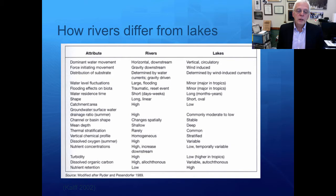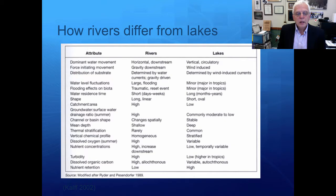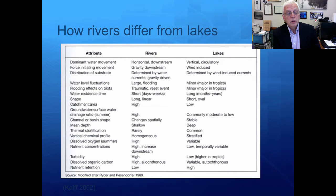The shape of rivers is very different — rivers are very long and linear, whereas lakes are quite short and oval. The ratio between the catchment area and the area of the water body is very high in rivers and relatively low in lakes. The groundwater to surface water drainage ratio in the summertime is quite high in streams and commonly low to moderate in lakes. Groundwater actually supplies what is called the base flow in rivers and streams.